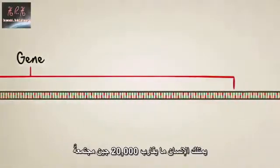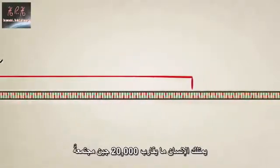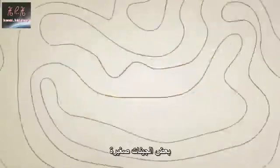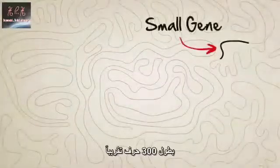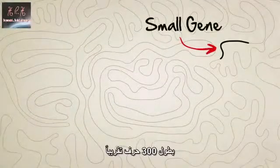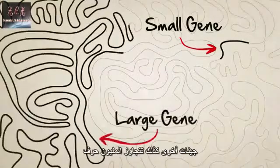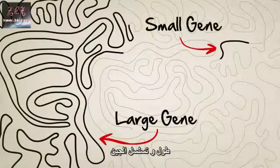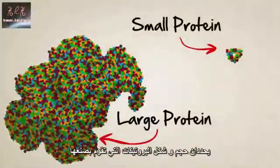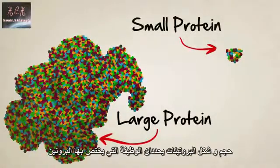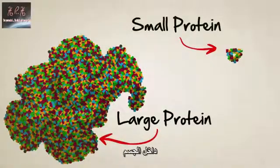A single strand of DNA contains thousands of genes, or unique protein recipes. Humans have roughly 20,000 altogether. Some genes are small, only about 300 letters long. Others are well over a million. The length and sequence of a gene determine the size and shape of the protein it builds, and the size and shape of the protein determine the function that protein will have inside the body.